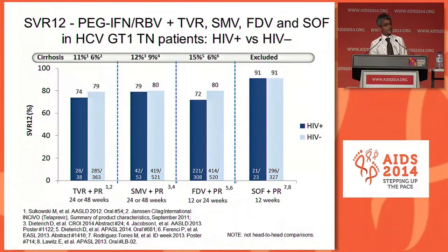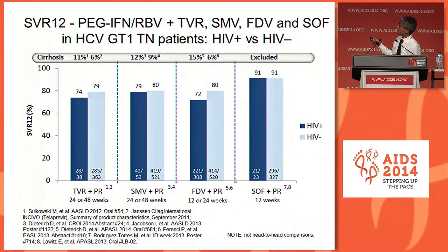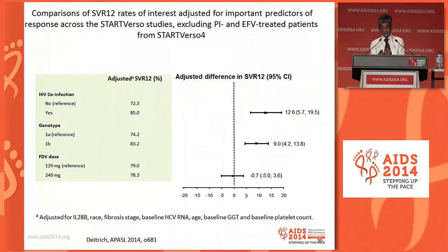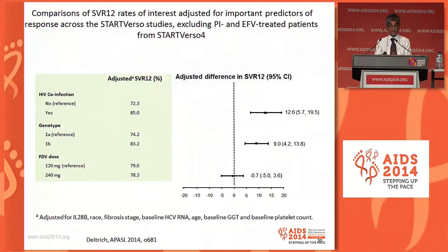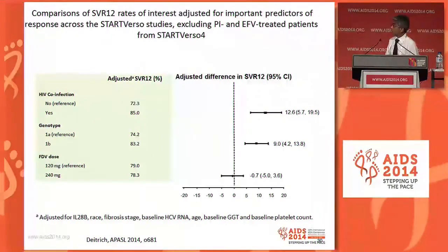The next question is whether these patients are any different to patients with hepatitis C monoinfection. If you put monoinfected patients in similar studies side by side with co-infected patients, across the board — whether interferon-containing or interferon-sparing — sustained virological responses are similar between mono- and co-infected patients. In fact, looking at the START-VERSAL studies with faldaprevir, PEG, and riba, adjusting for all other factors, HIV-positive patients were actually more likely to achieve a sustained virological response than HIV-negative patients, probably because of better adherence in clinical trials.